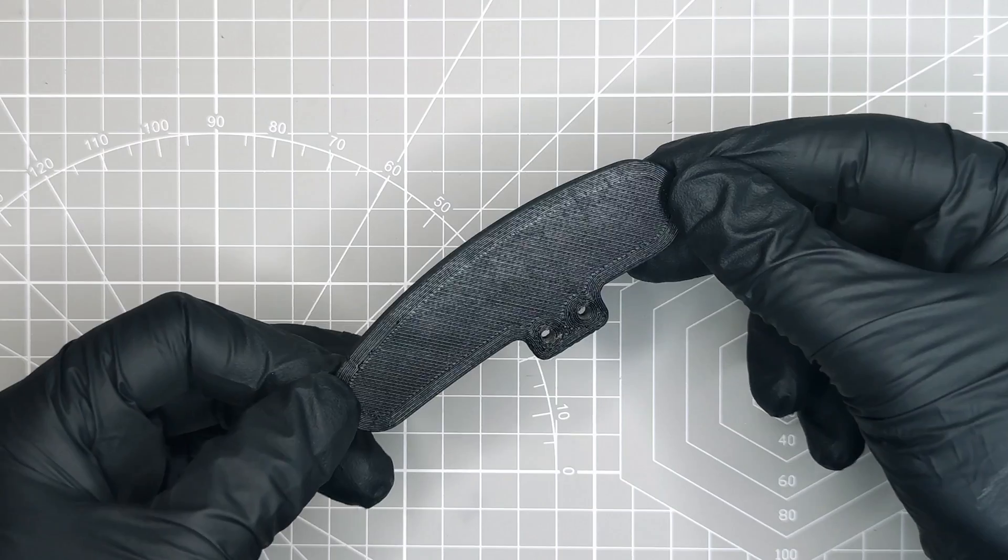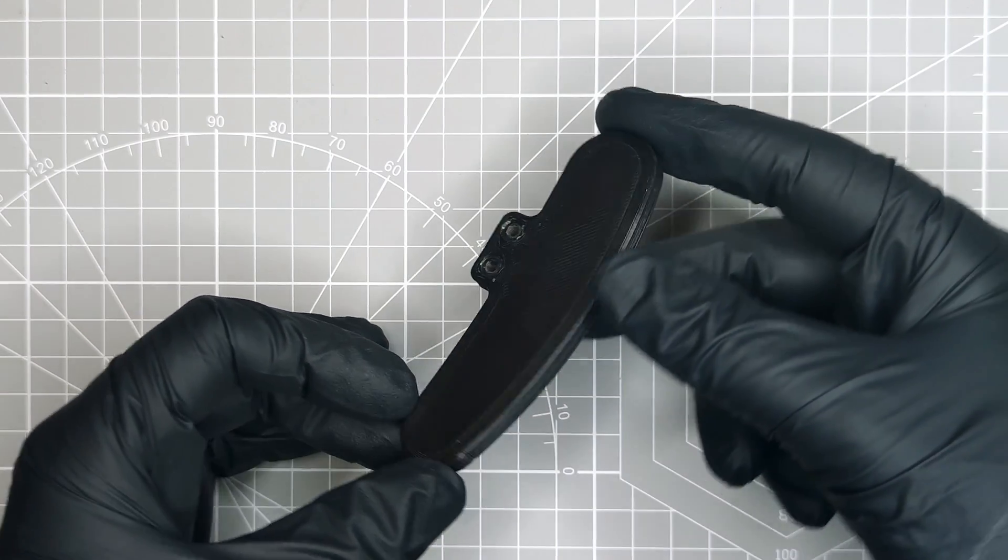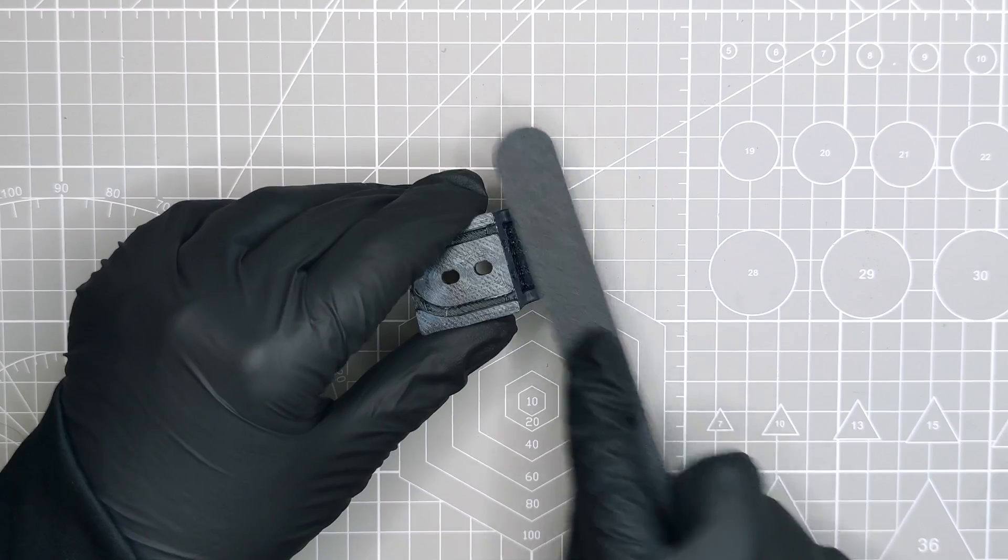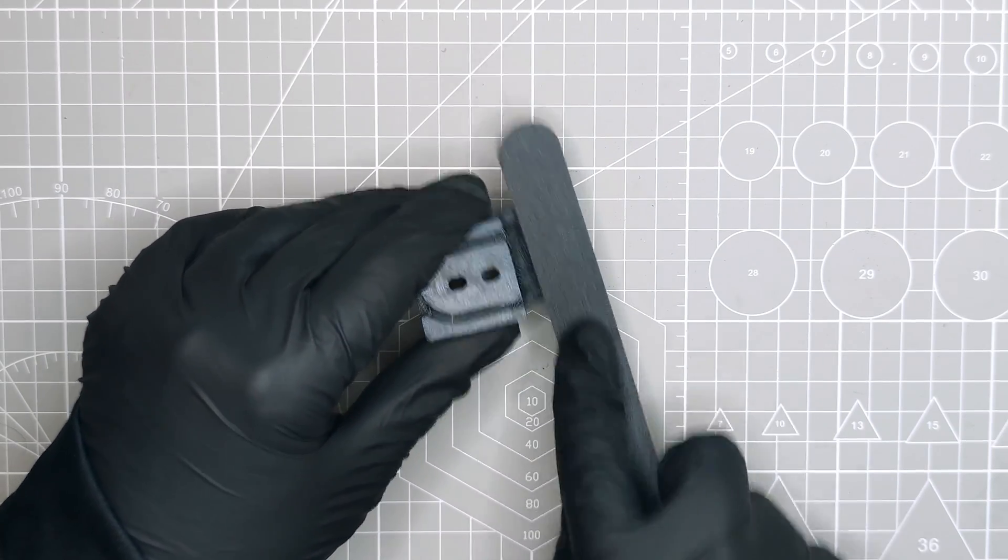The paddle does not require any support cleanup as it was printed flat on the bed. We can now proceed to smooth the remaining rough edges of the base and the lever.